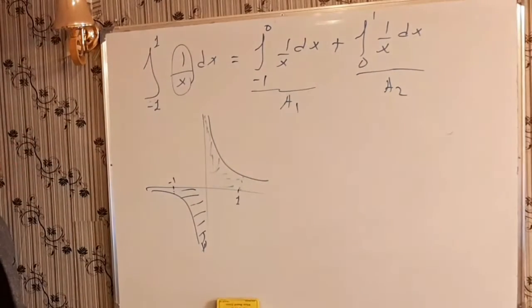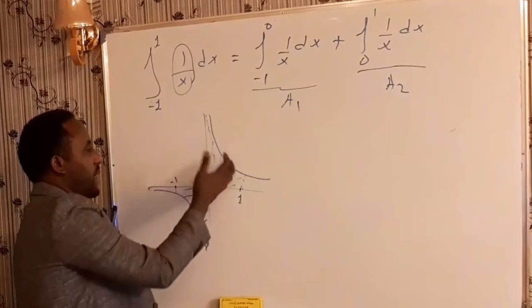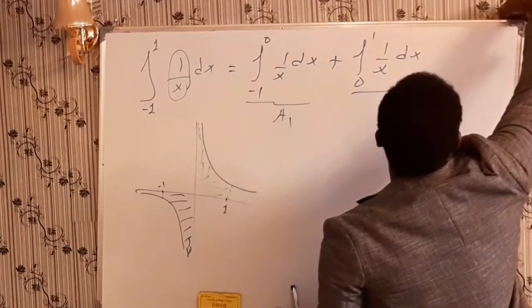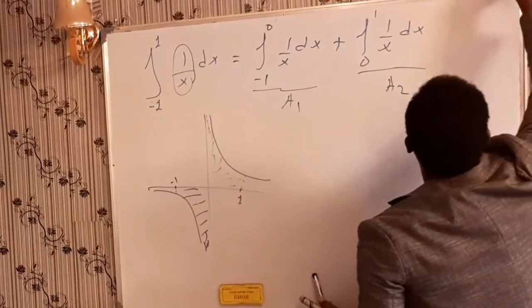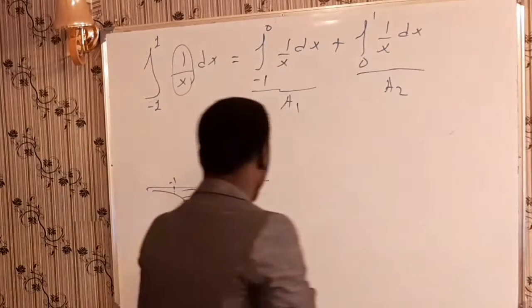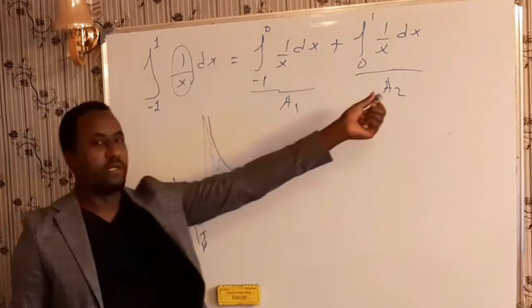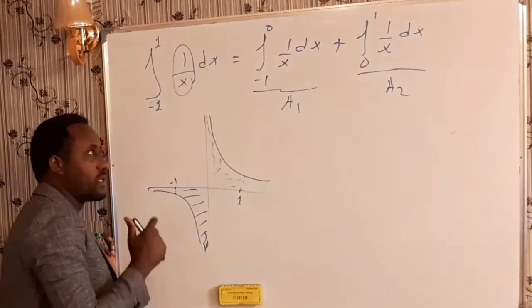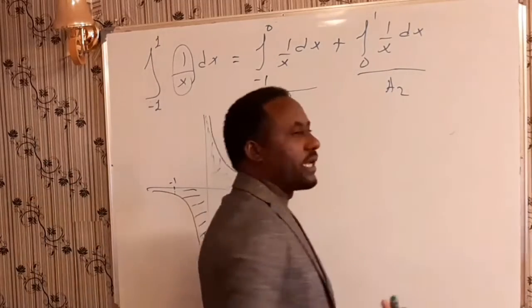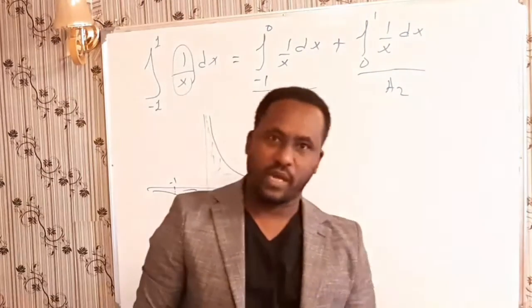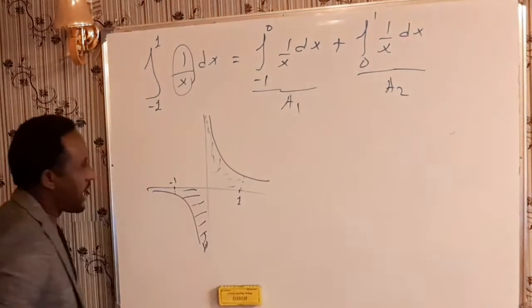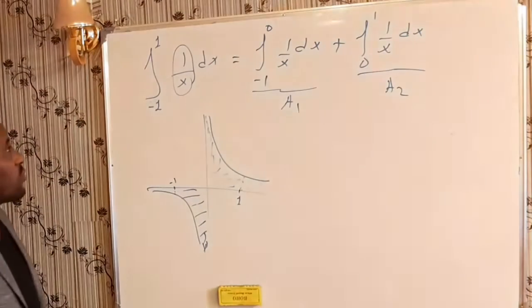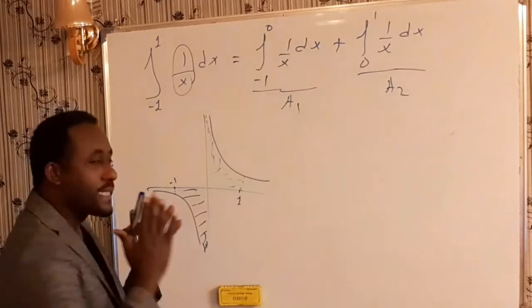As you see, this part and this part seem to be the same in shape. When finding this area, area 1 is a negative area and area 2 is a positive area. But in the case where we are finding the area of a region, there is no such thing as a negative area as a whole. So, can we actually find the area of this problem? Let's see whether it exists or not.